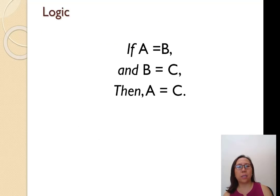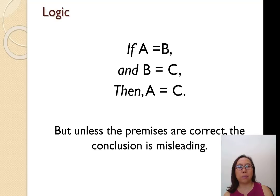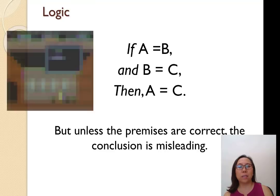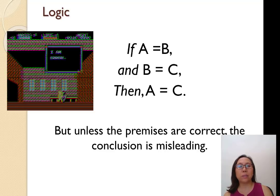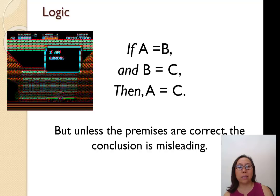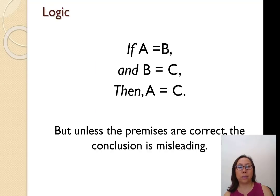Logic looks something like this: if A equals B and B equals C, then A must equal C. The limitation with logic is that unless the premises are correct, the conclusion is incorrect or misleading. So there's very little room for any error in logic.